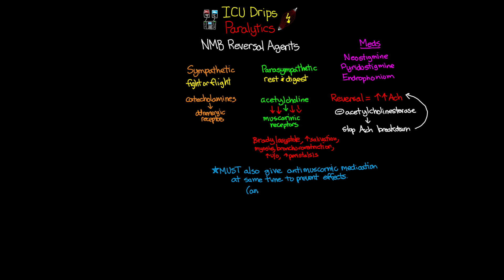Our antimuscarinic drugs — you'll often hear them referred to as anticholinergic. There are three main drugs in this category: scopolamine, glycopyrrolate (also known as Robinul), and atropine. Scopolamine is one we rarely use IV, mainly due to its sedative properties. It's most commonly given as a transdermal patch for its antiemetic properties.